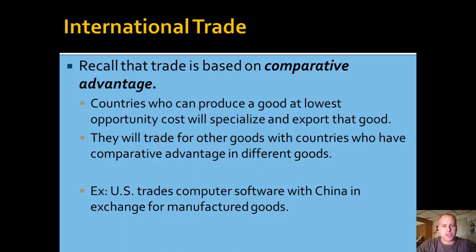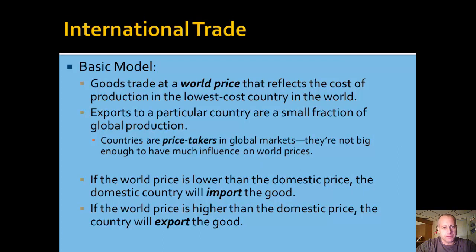So the U.S. produces computer software and trades with China for manufactured products. This trade is based on comparative advantage. In the basic model we'll examine here, goods will trade at a world price that reflects the cost of production in the lowest cost country in the world, or lowest cost countries if there are several that are very close.